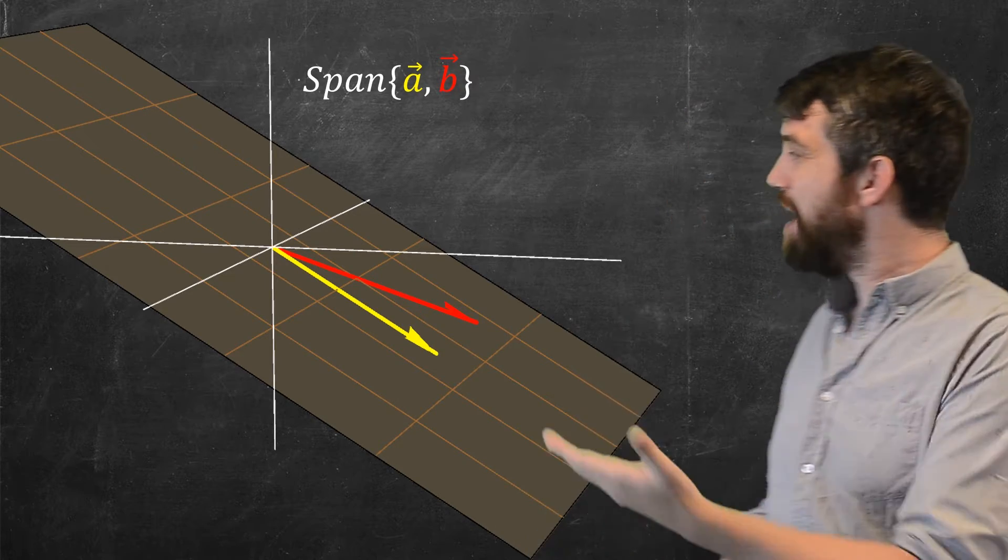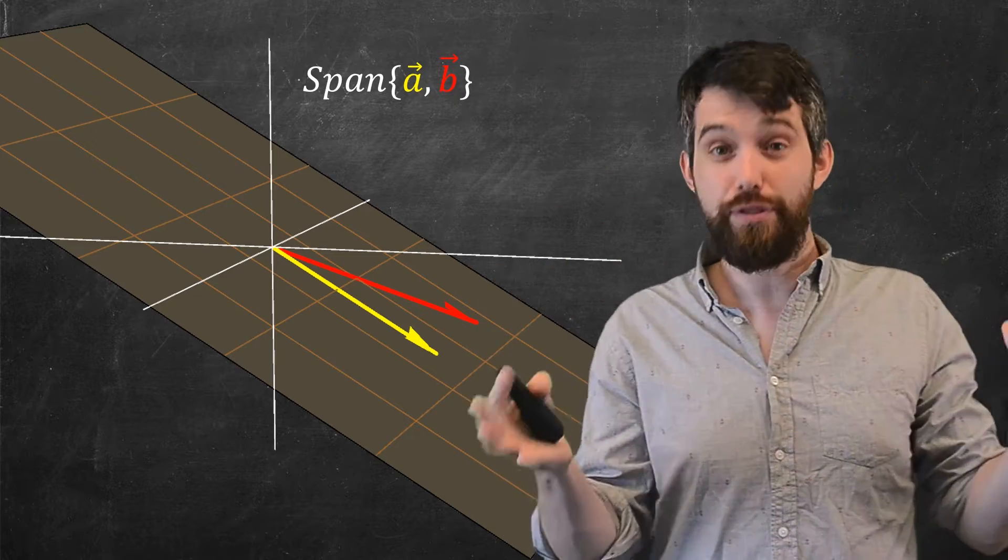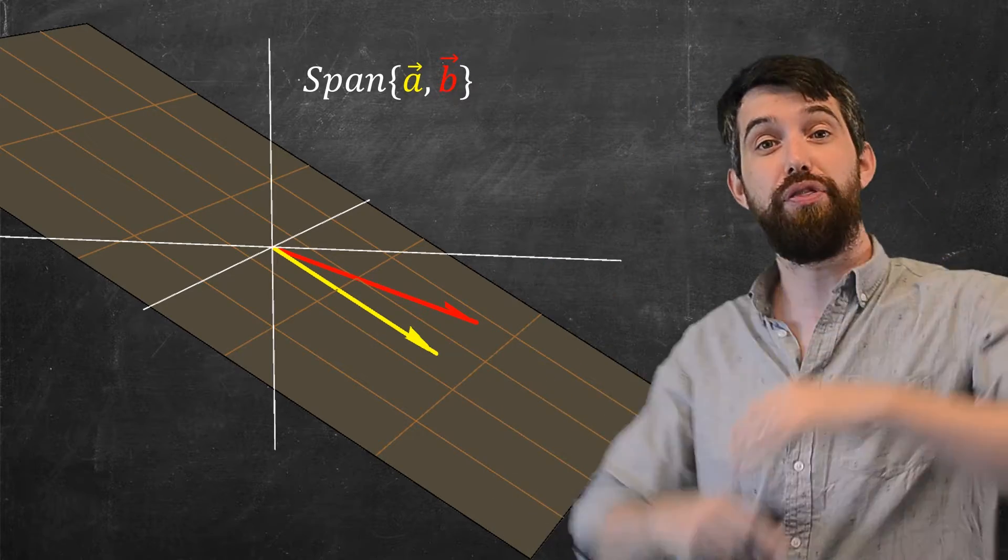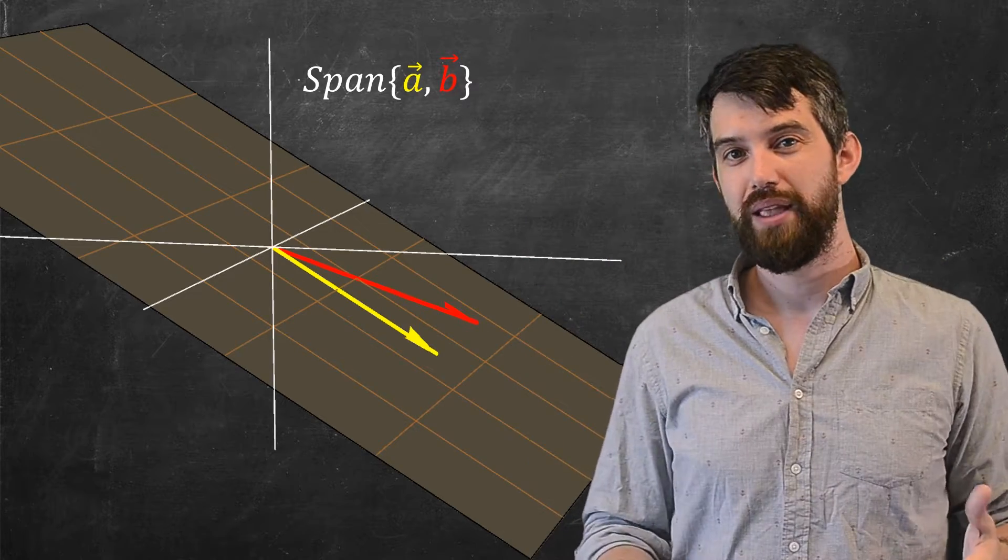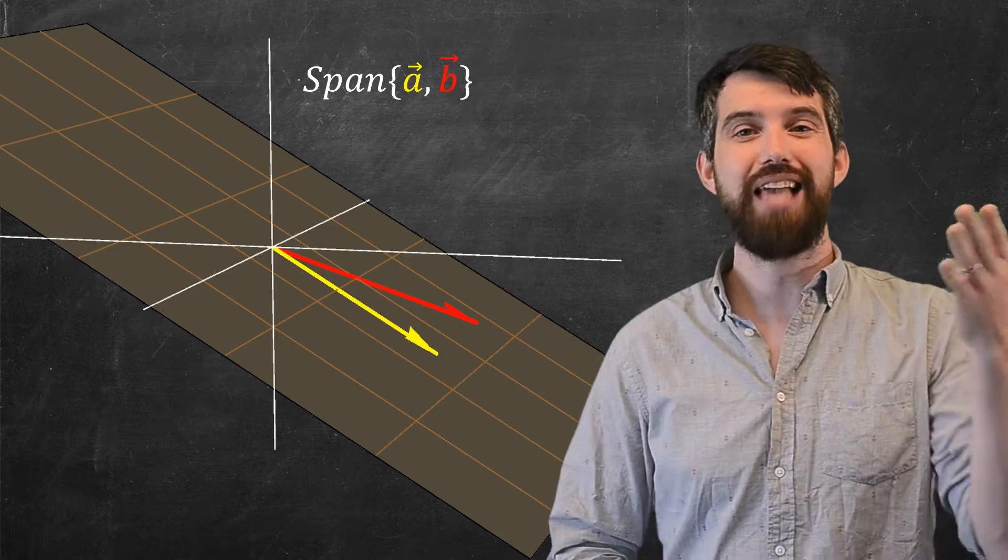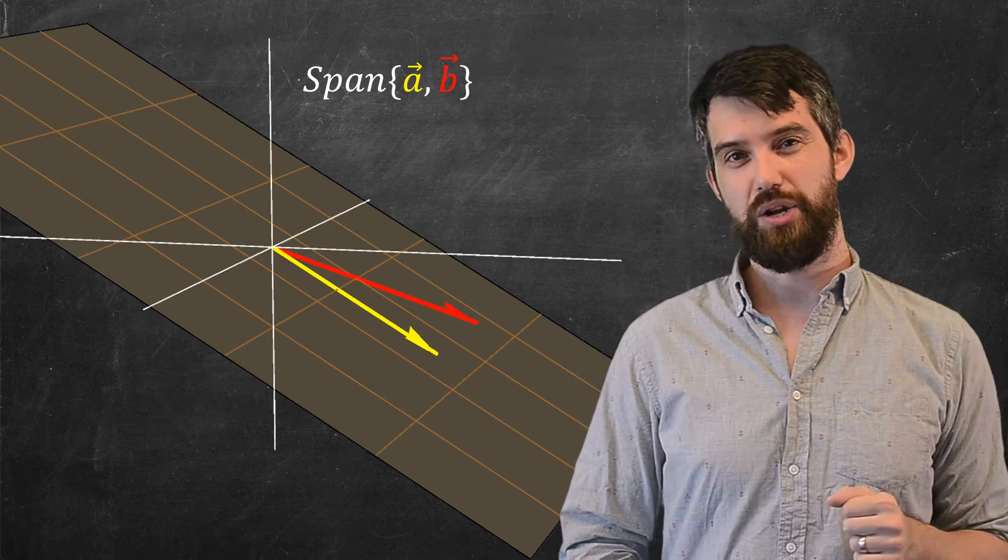So what I have here is I've got a plane. This is living in R3 now, and the plane is this two-dimensional thing that's sort of cutting through, it's a subset of R3. And I've specified two different vectors, A and B, that are going to be on this particular plane.